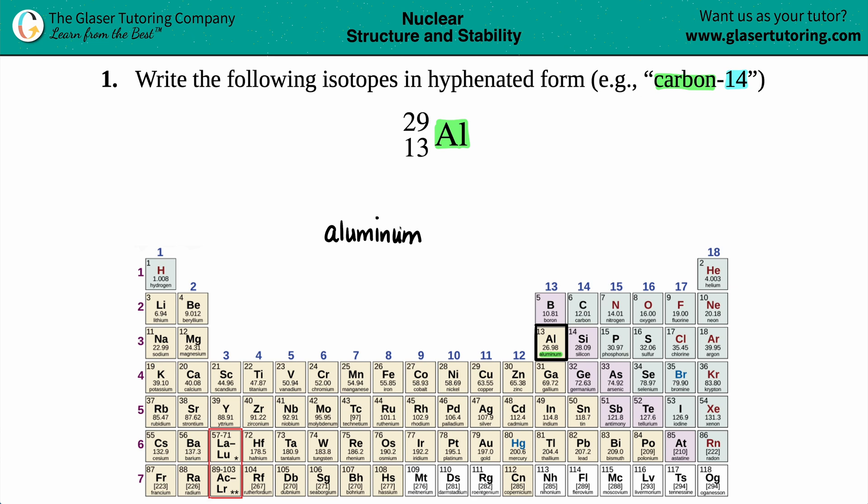I believe they call it aluminium. I believe that on those periodic tables used in England, there is an I here. And that's the original spelling: al-u-mi-n-i-um. But over here, we kind of shortened it to aluminum.